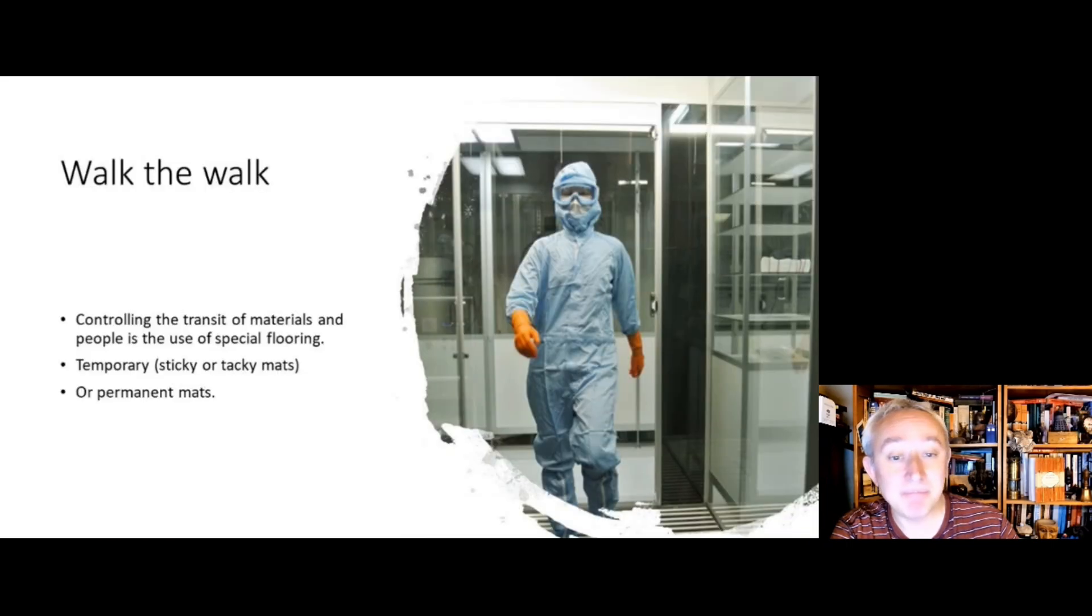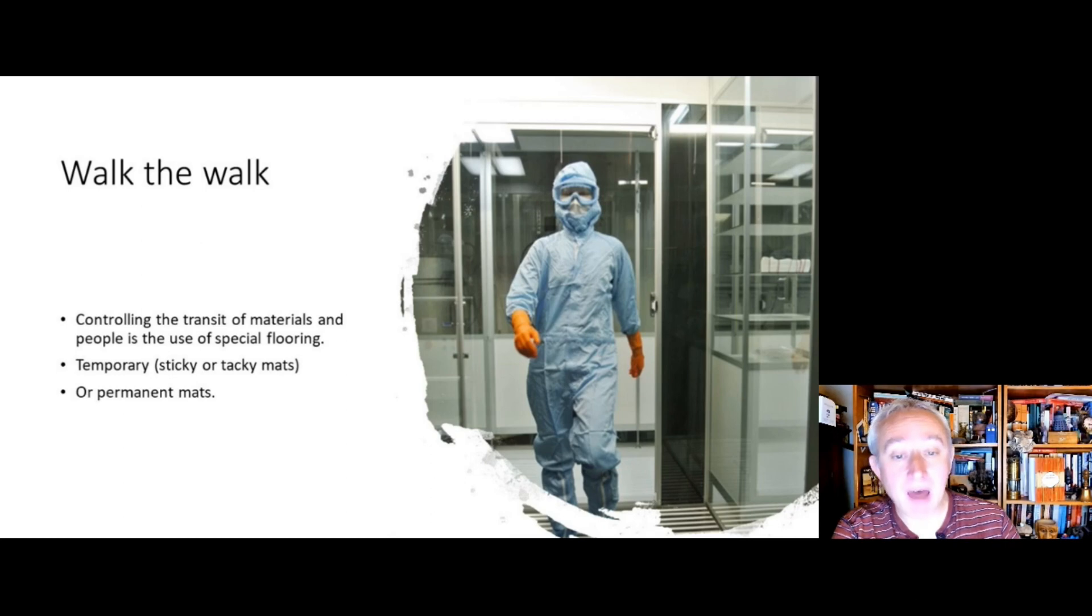One way to reduce the level of contamination entering clean rooms from moving materials or people is to use special flooring. This type of flooring is either in the form of temporary removable tacky mats or permanent mats. Permanent mats are generally superior to tacky mats. These mats are designed to remove visible and sub-visible particulates and therefore reduce the likelihood of the transfer of contamination.